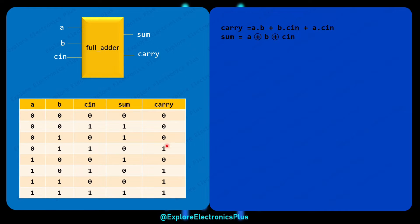Sum will be one in these four cases, and carry will be one in these four cases. Carry and sum are both one when the input is 1, 1, 1 — meaning if you add in decimal: one plus one plus one is three. The representation of three requires two bits, so sum and carry take 1 and 1. That is how a full adder works.